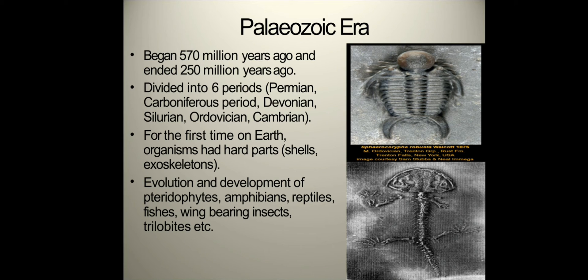The Paleozoic era began from 570 million years ago and ended 250 million years ago. It is divided into six periods: the Permian, Carboniferous, Devonian, Silurian, Ordovician, and Cambrian periods. For the first time on Earth, organisms had hard parts in this era. This era also saw the evolution and development of trilobites, amphibians, reptiles, fishes, wing-bearing insects, and trilobites.